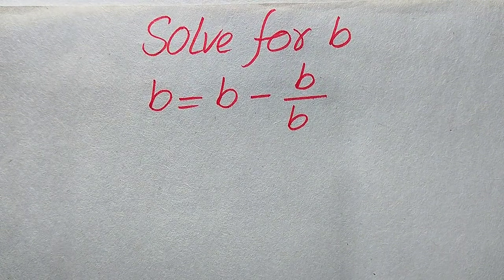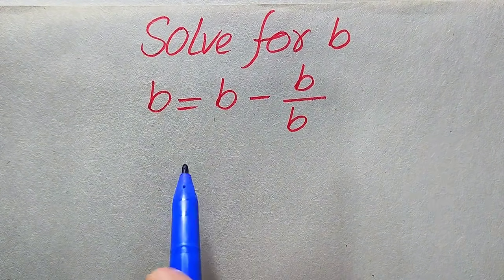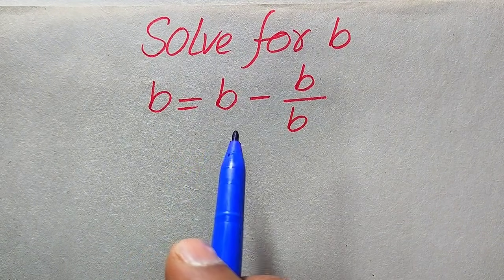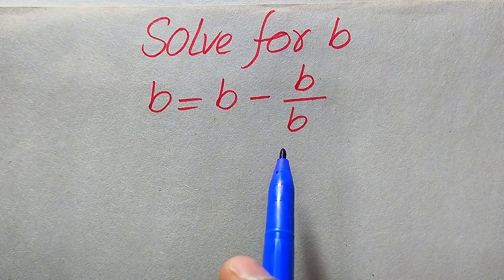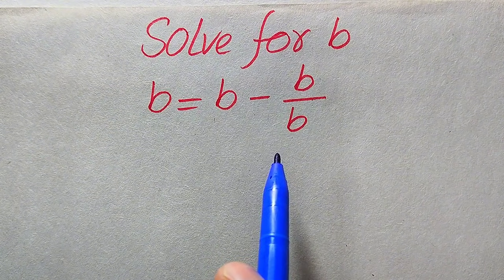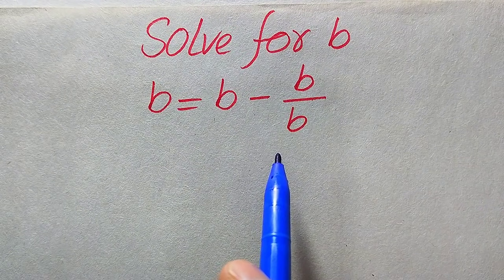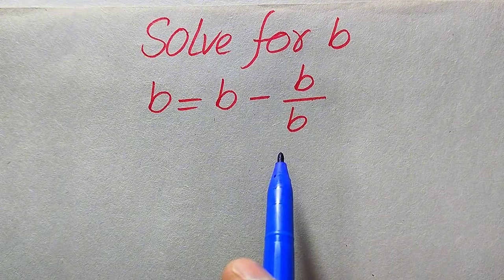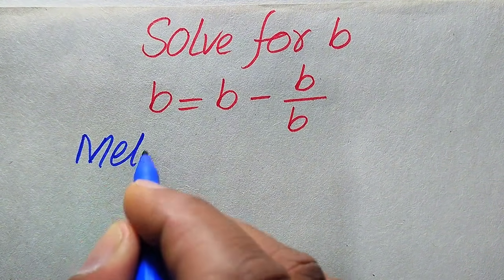Hello everyone, welcome. We have b equals the square root of b minus b divided by b, and we solve this problem for all values of b. First we need to find all the roots of this equation, and at the end we will verify which roots are solutions and which are extraneous roots. We solve this problem using two methods — I hope you like both of them.